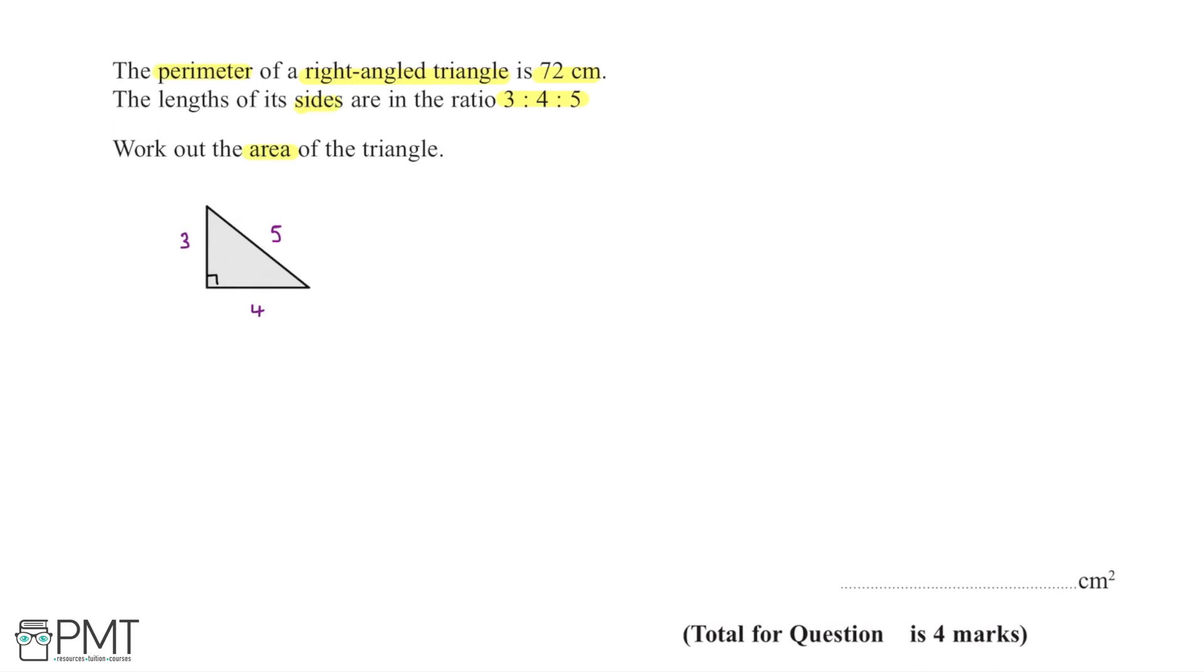The perimeter of the triangle is 72cm, so we need to scale up this ratio of 3:4:5 so the side lengths sum to 72cm. Adding 3 + 4 + 5 gives us 12.